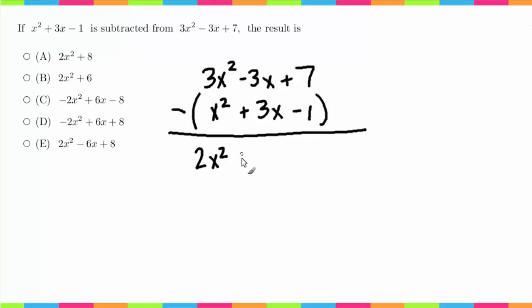And then positive 7 minus negative 1 is the same as positive 7 plus 1, which is the same as plus 8. So looking over here on our answer choices, we're going to have a positive 2x squared minus 6x plus 8, which is answer choice E.